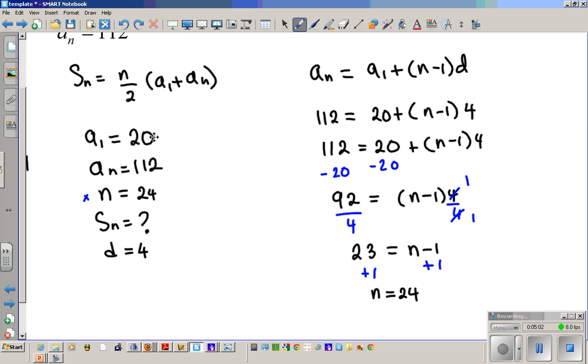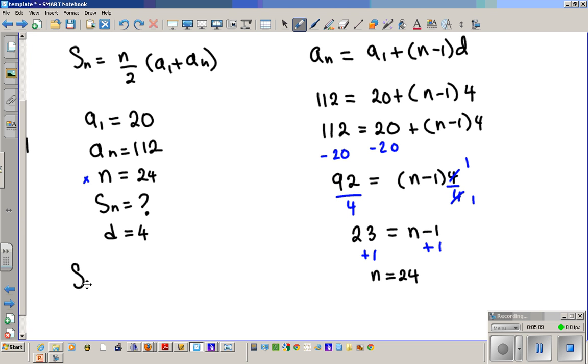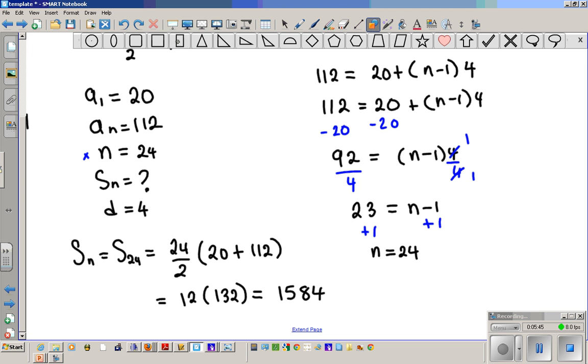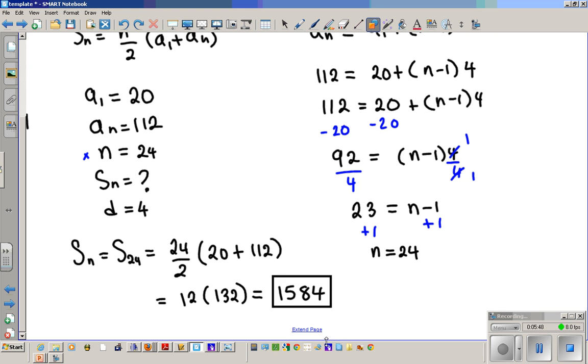So now we have 3 knowns and 1 unknown. So we can now use the SN formula. Let's go ahead and find what the sum is. SN in this case is going to be S24, because we know that N is 24. So S24 is going to be N over 2, which is 24 over 2, times A1 plus AN, 20, A1 is, AN is 112. So if we do this, 24 over 2 is 12, 20 plus 112 is 132. You can multiply these two numbers, and we'll get 1584. So this is the sum of the arithmetic series.